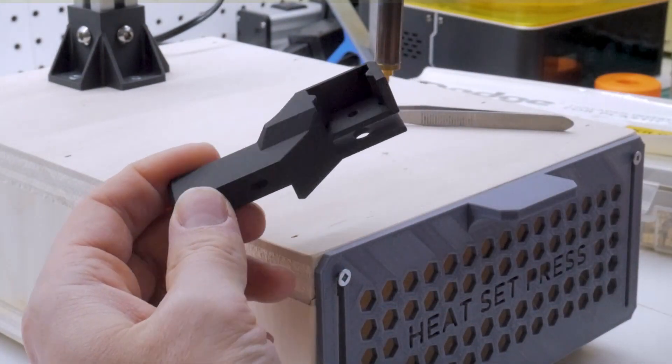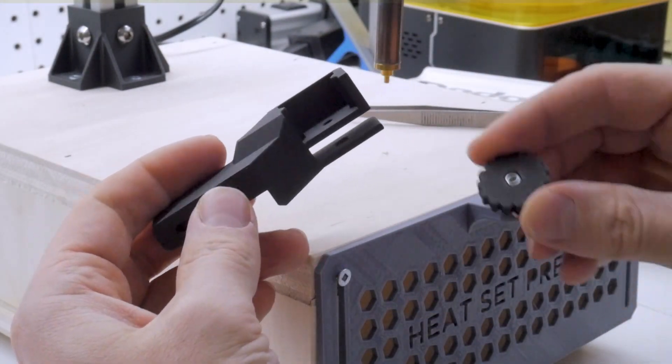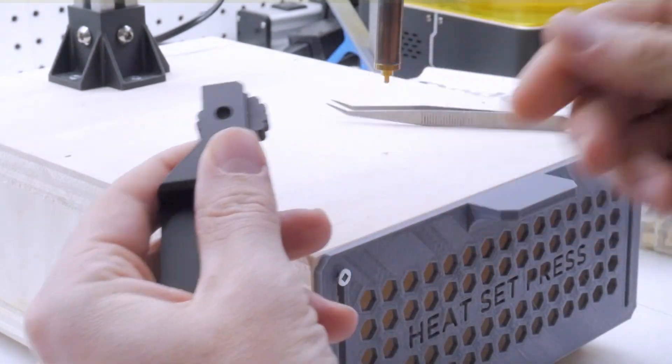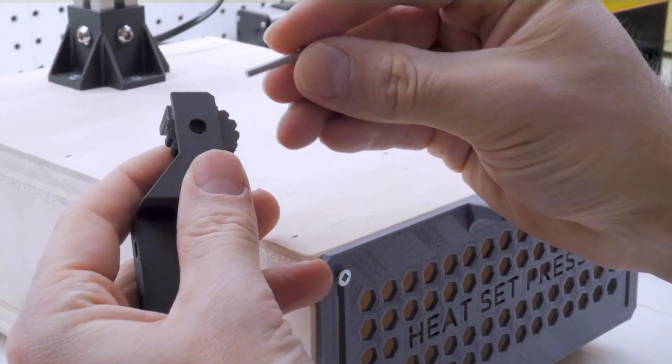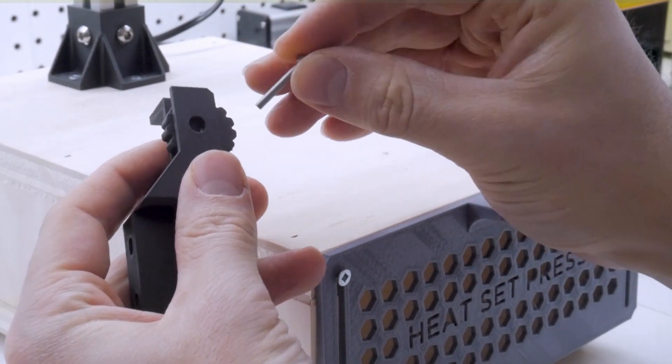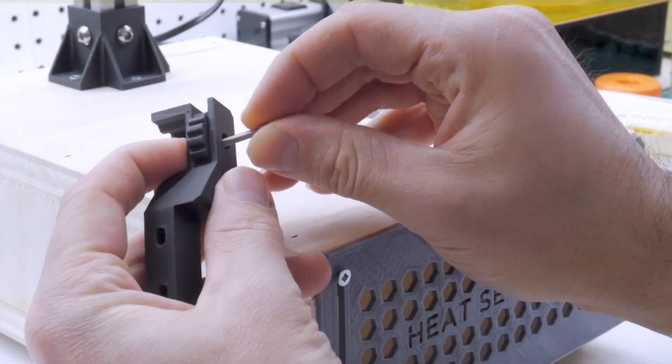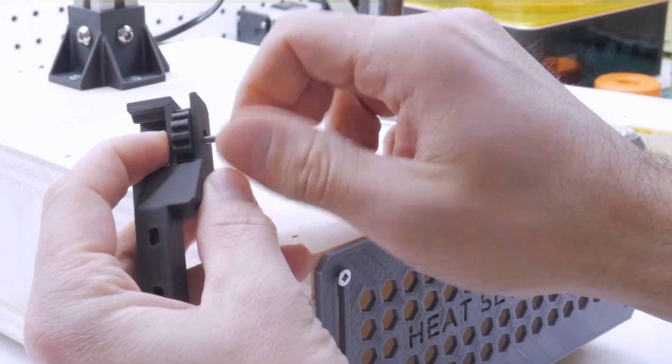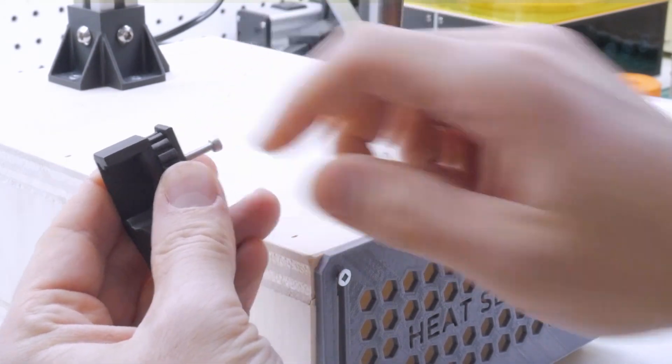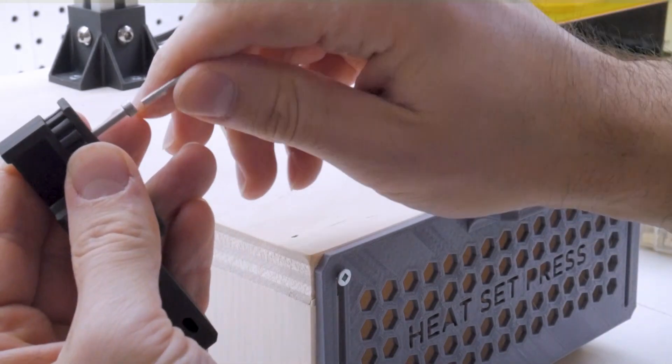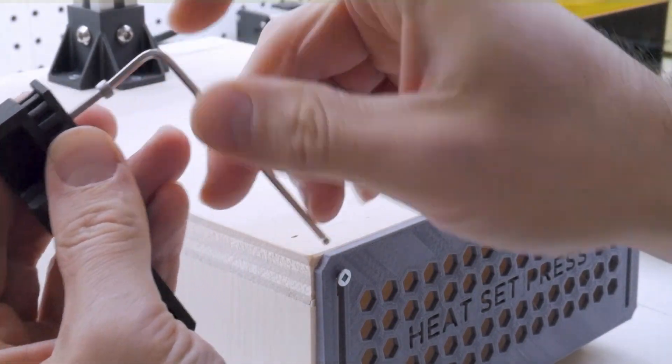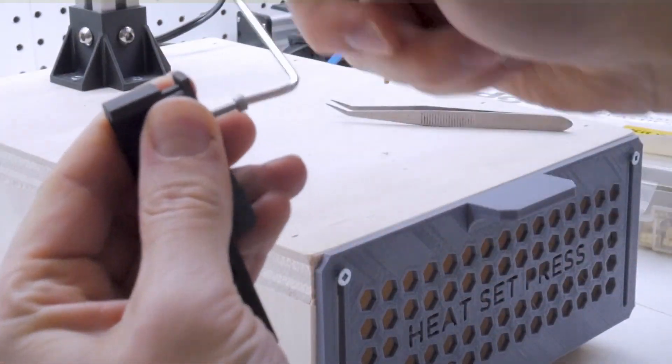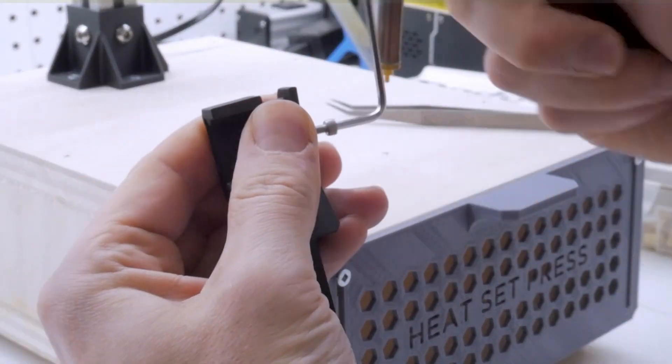Next you're going to grab the main body and the adjustment knob. With the nylon locking nut facing upwards towards that void, insert the adjustment knob into the slot and grab your M3 by 20 socket head cap screw. Thread that through the adjustment knob, which will go through the nylon locking nut. You can hold onto the adjustment knob with your fingers while you tighten this all the way through.